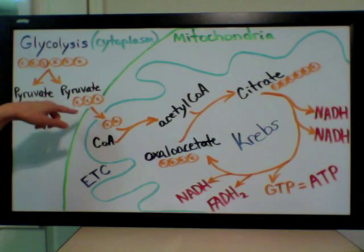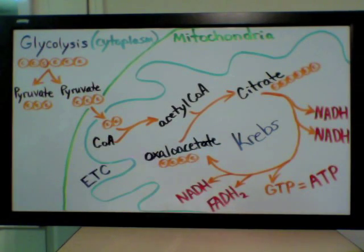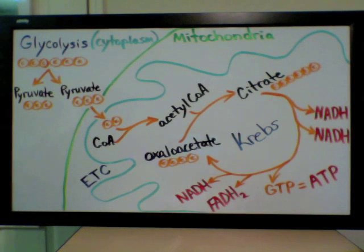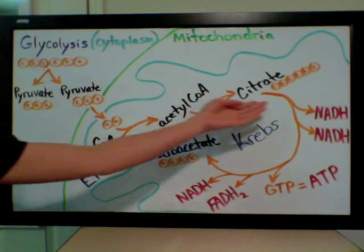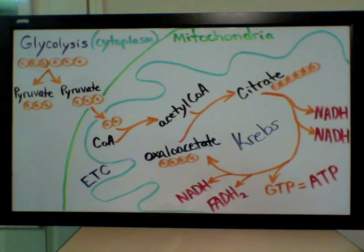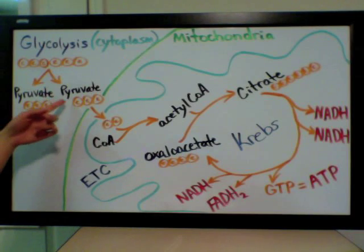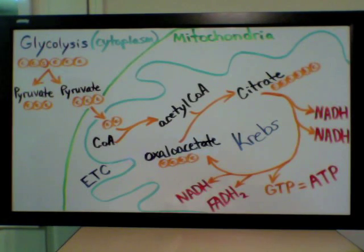Acetyl-CoA then enters the Krebs cycle, passing along its two carbons to oxaloacetate to form the six-carbon molecule citrate. This cleaving of a carbon atom is called pyruvate oxidation, or sometimes the link reaction, because it links the first reaction to the second reaction in cellular respiration. In eukaryotic cells this occurs in the matrix, but for prokaryotes undergoing aerobic respiration, both the Krebs cycle and pyruvate oxidation take place in the cytoplasm because prokaryotes don't have mitochondria. The Krebs cycle is also called the citric acid cycle or the TCA cycle. Citrate and citric acid are the same compound — one is in solid form and one is dissolved in solution.